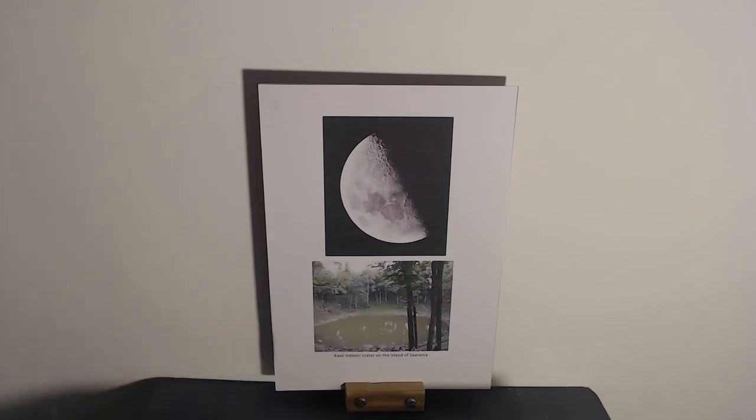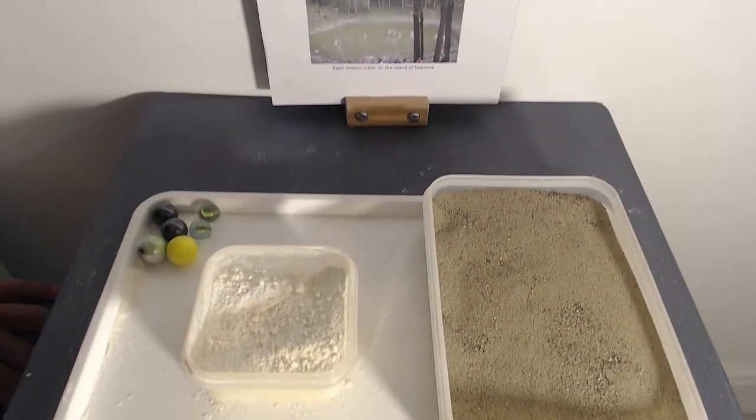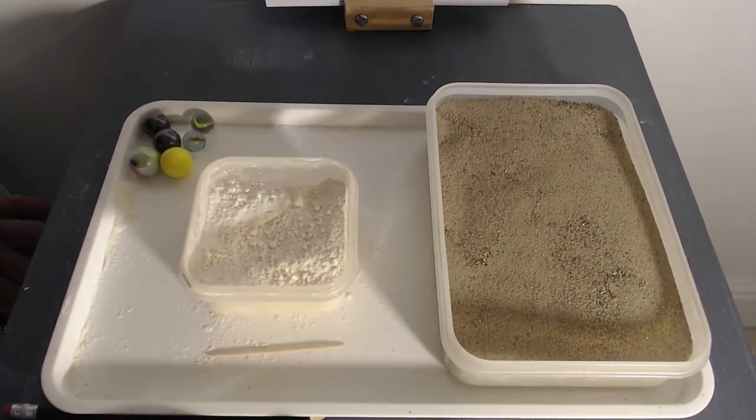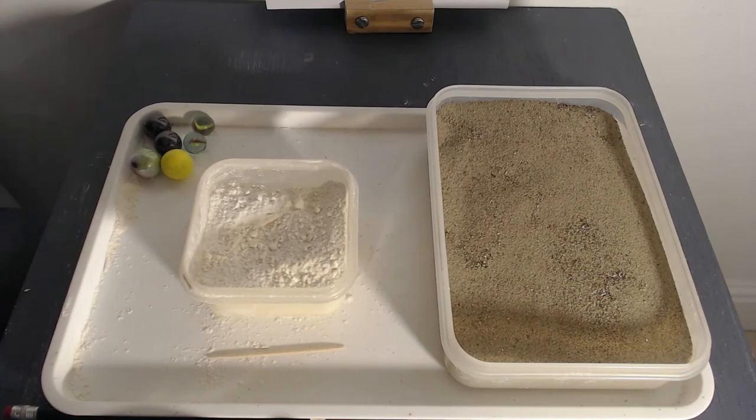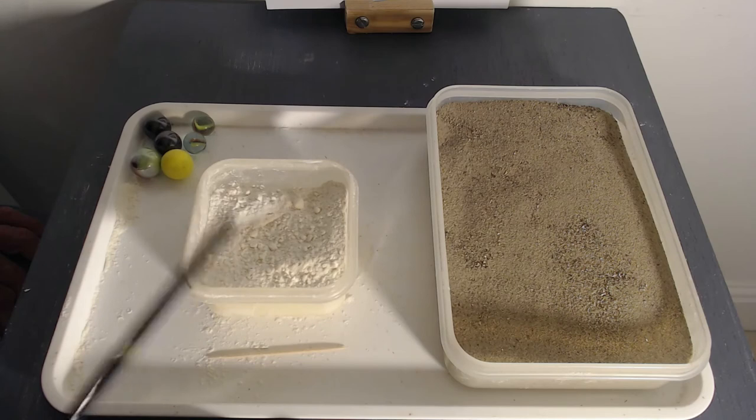Well, on the table, I've got some possible surfaces. And we're going to do a simple experiment to have a look at the effects of various projectiles on these surfaces. The one on the right, this one over here, is actually sand, and this one is flour.